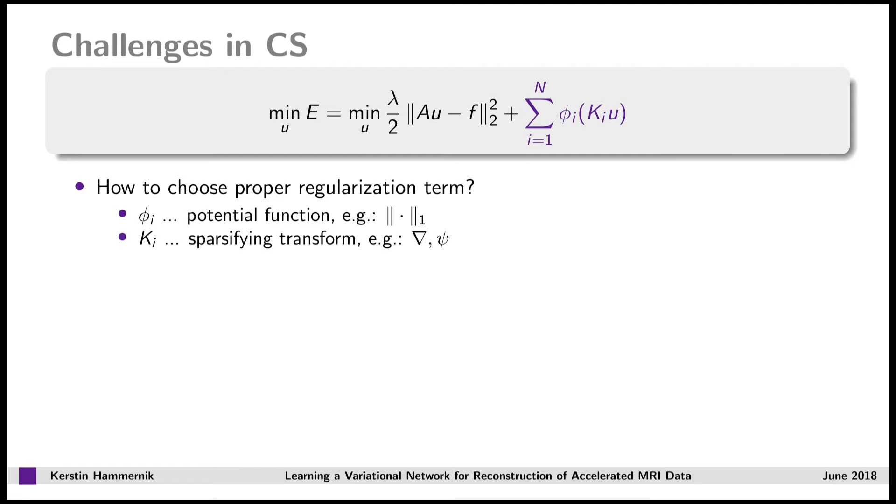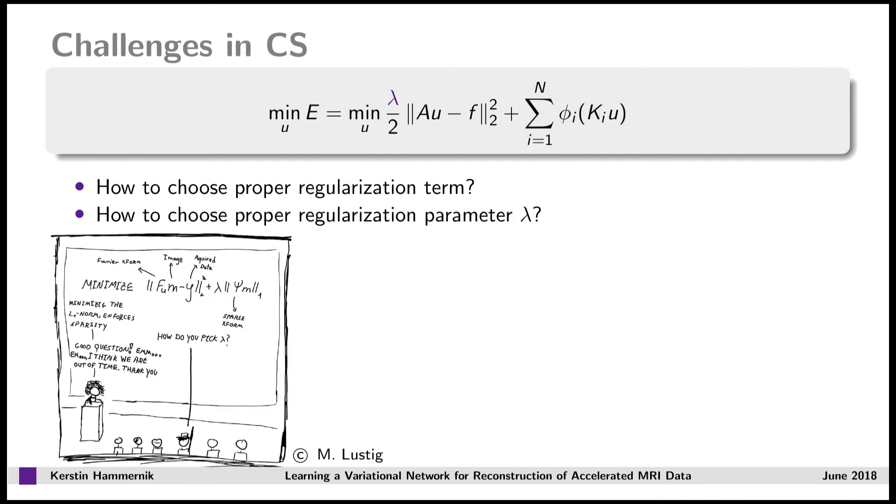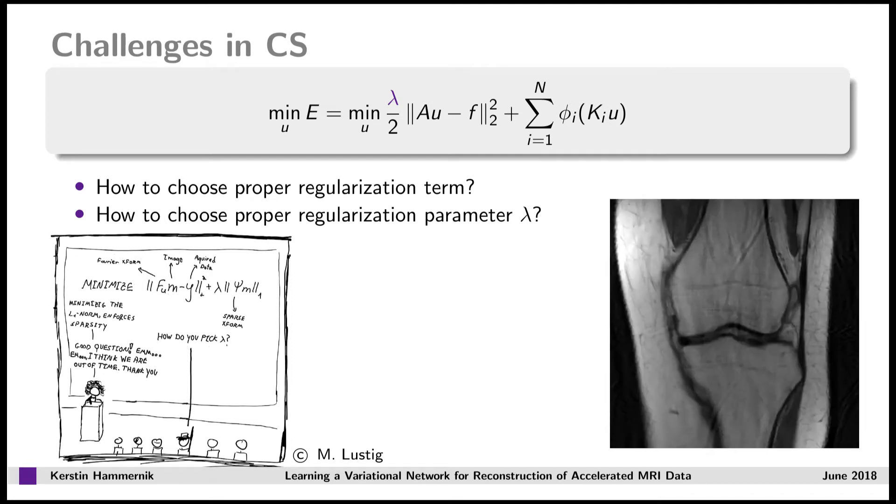So, how do we choose the potential function and the sparsifying transform? Common examples here are the total variation and the wavelet transform. The next question is, how do we choose a proper regularization parameter? If we choose it too high, the reconstruction still contains artifacts. If we choose it too low, the reconstruction appears oversmooth. So, is this a proper regularization?